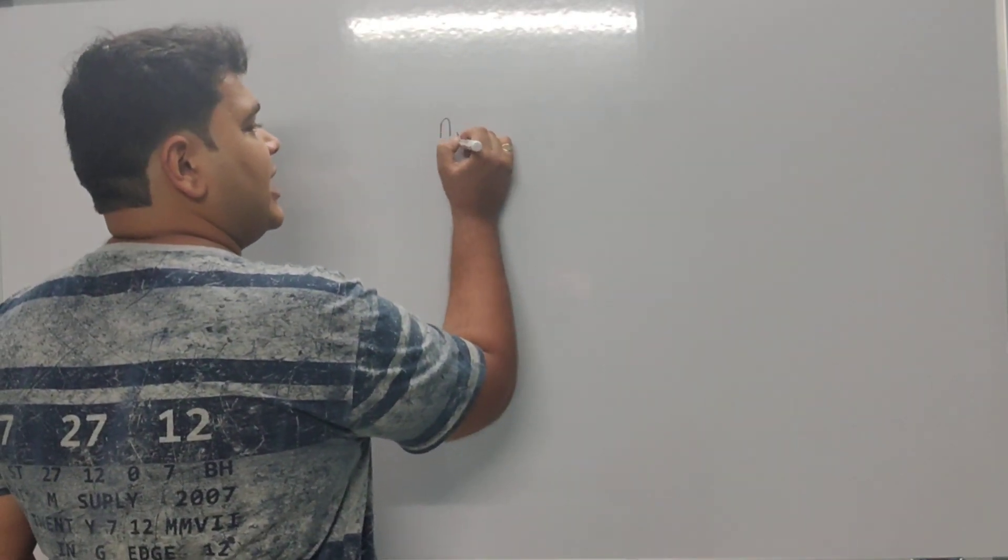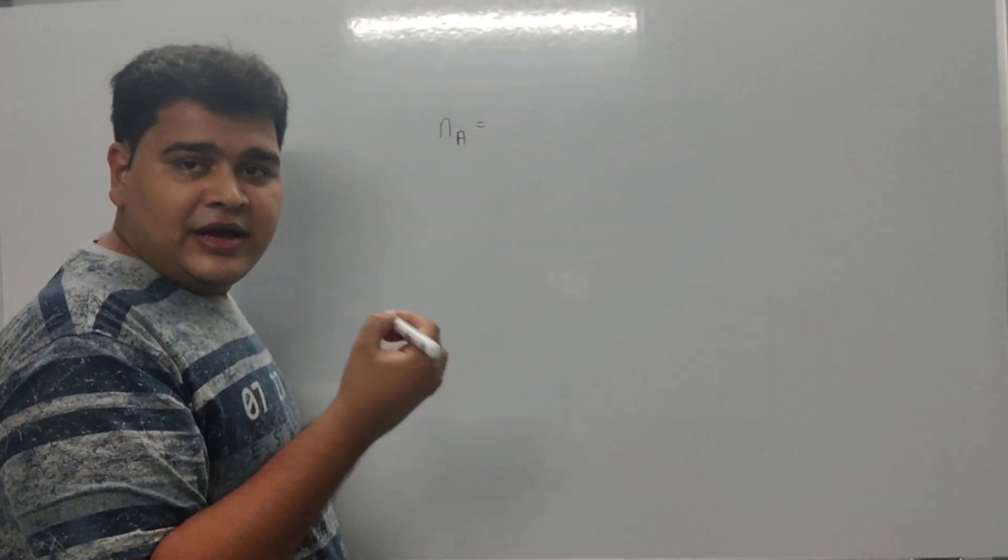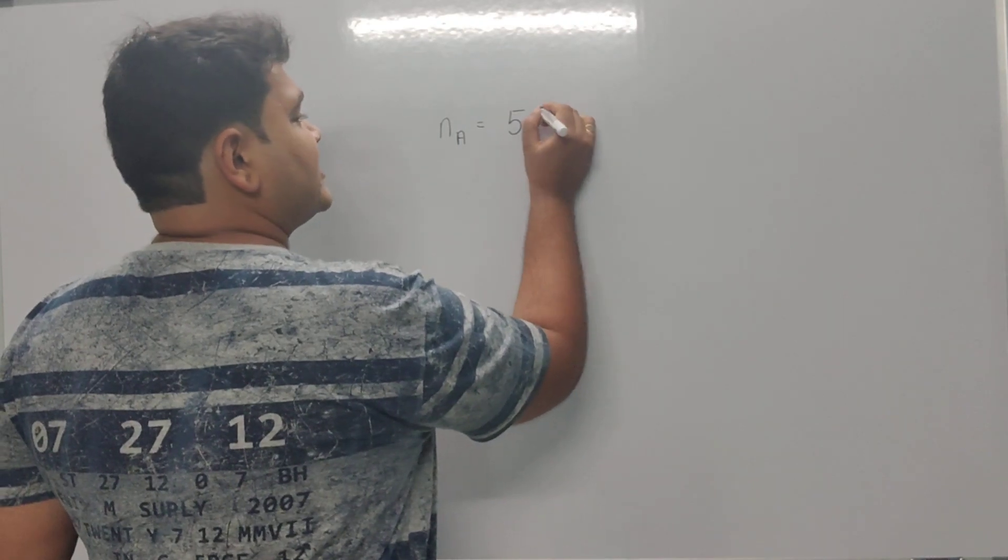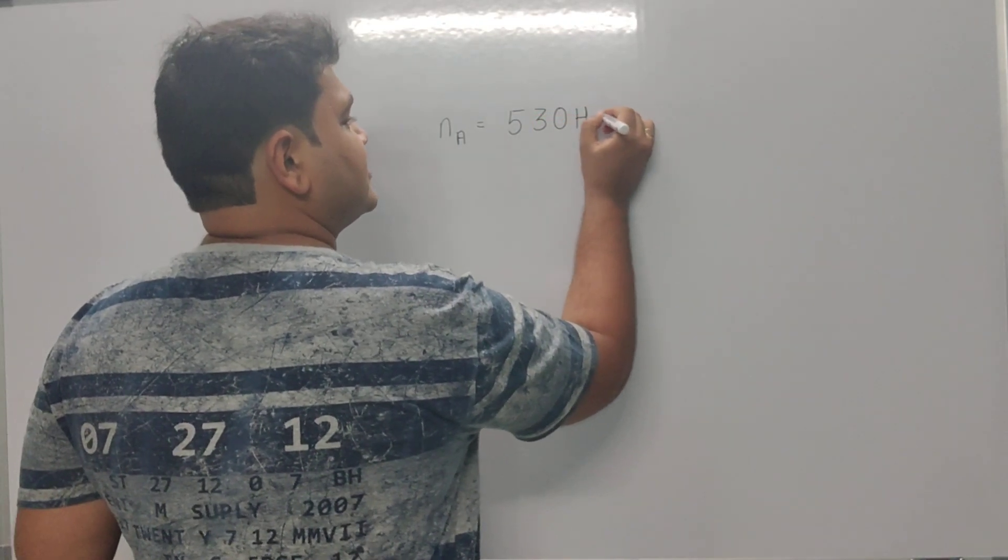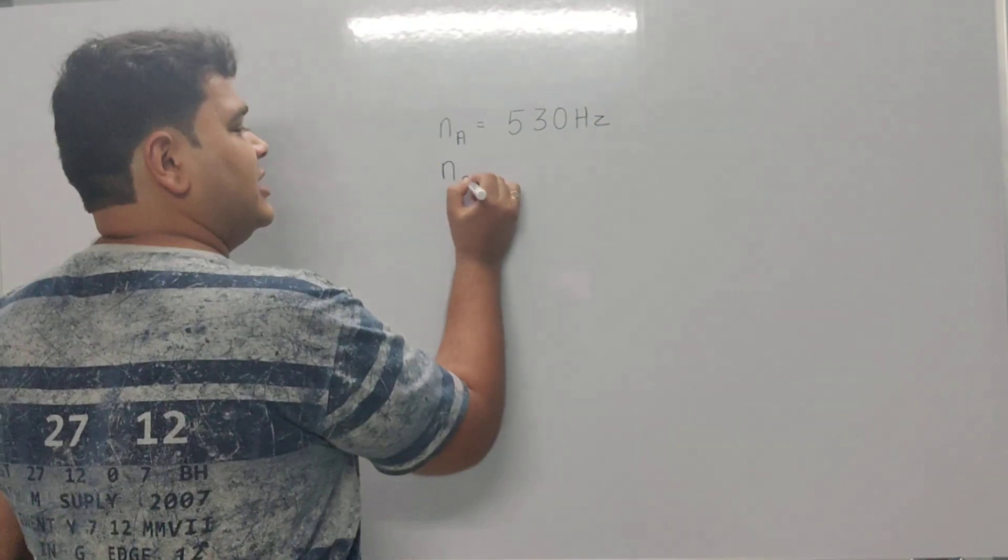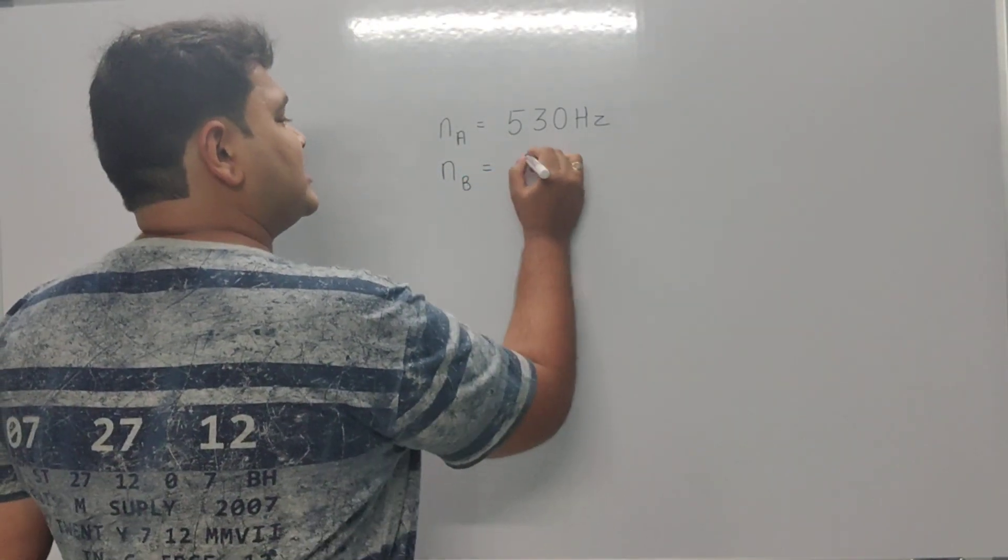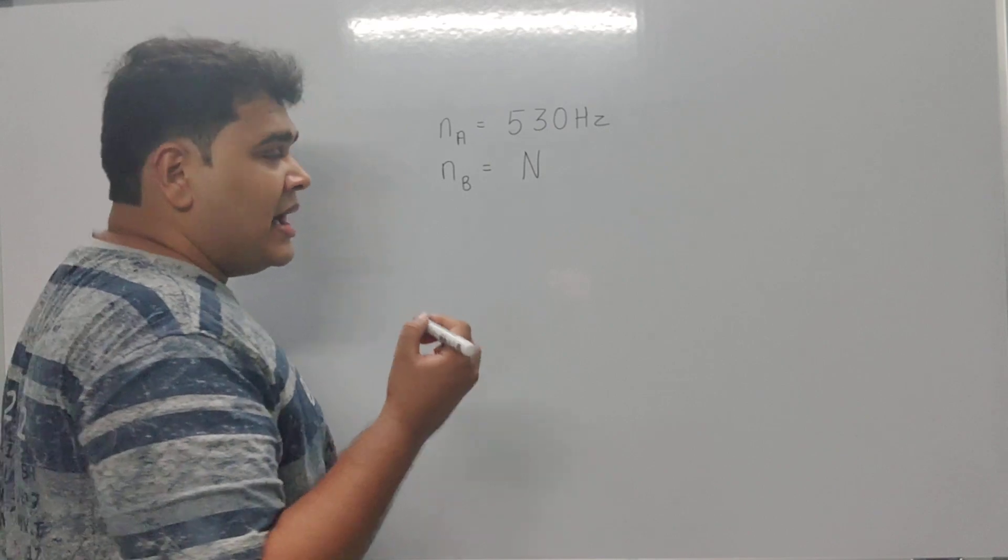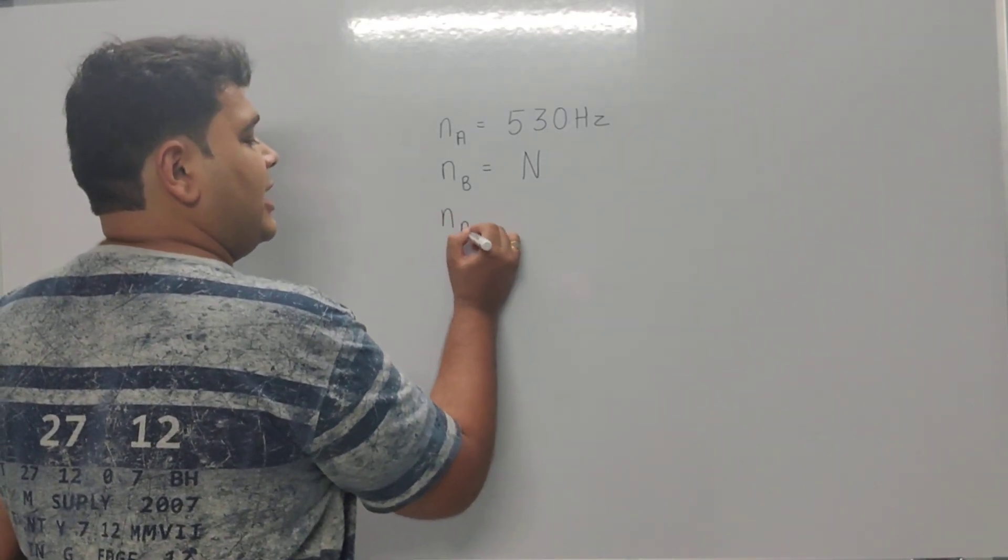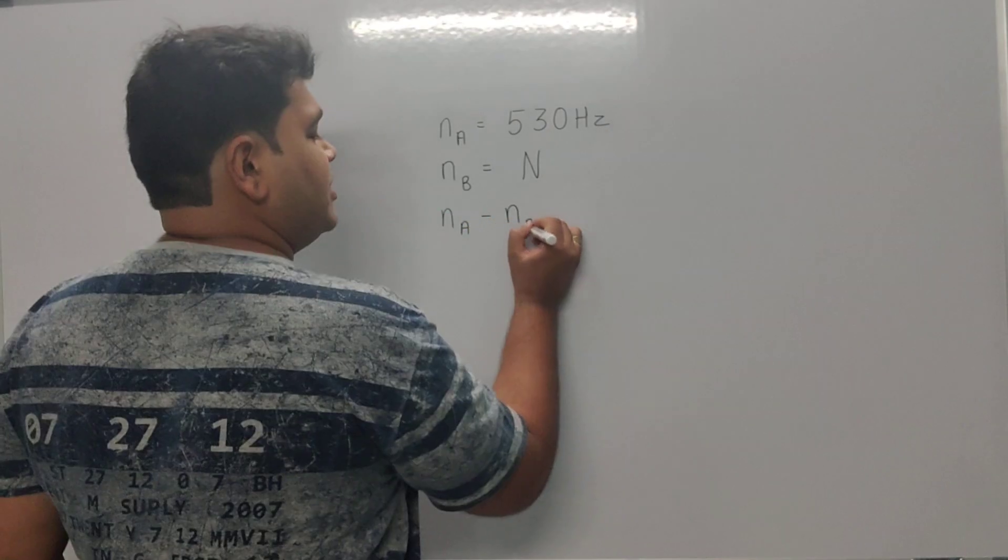Let N_A be the frequency of A, given as 530 Hz, and N_B be the original frequency of B. We can write that the modulus of N_A minus N_B is nothing but 6 Hz, which is the beat frequency given in the initial case.